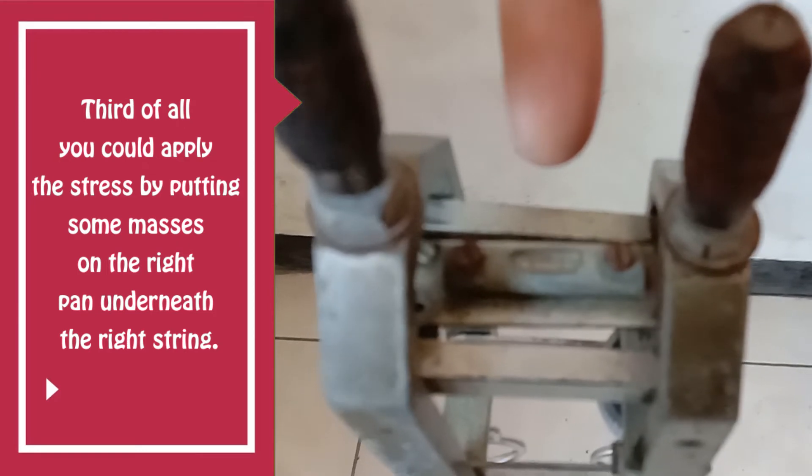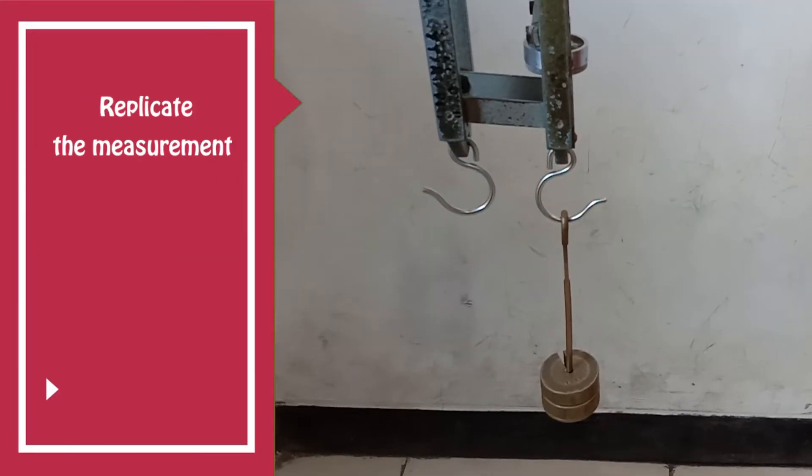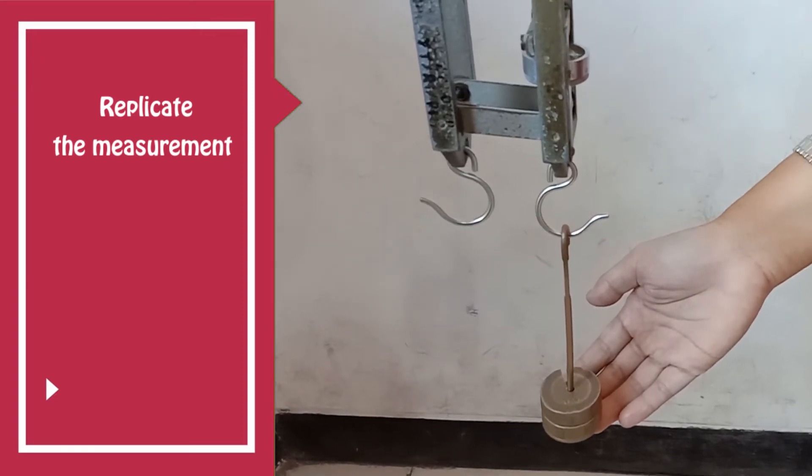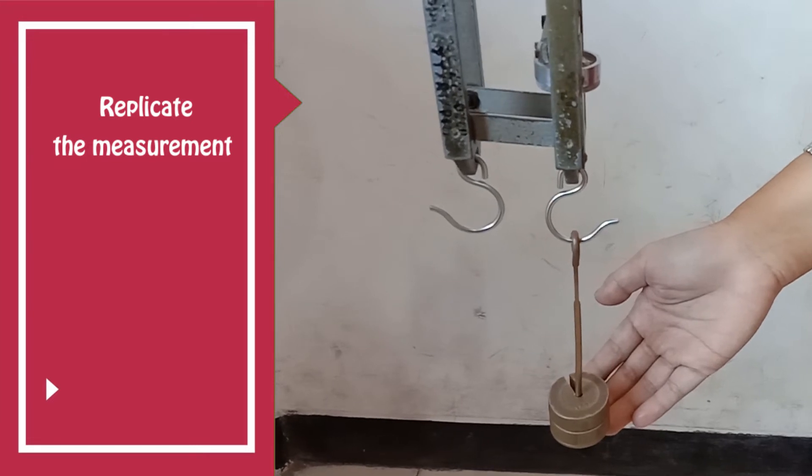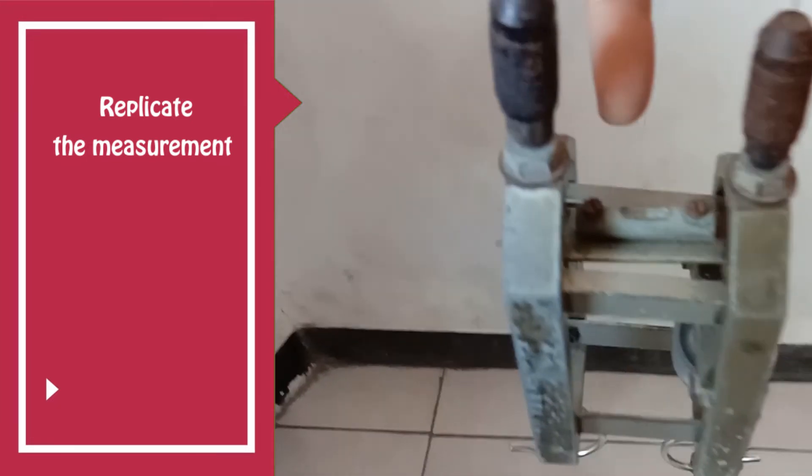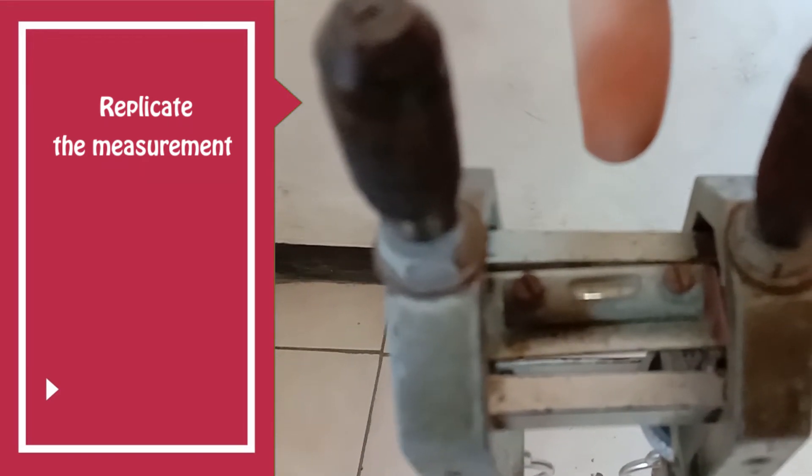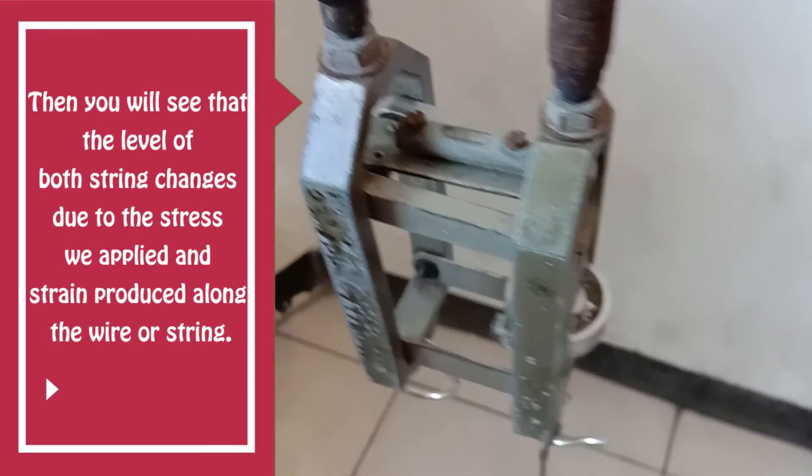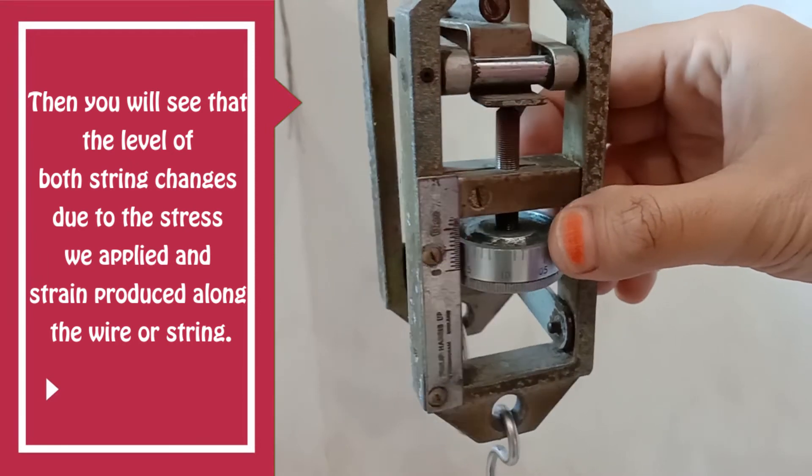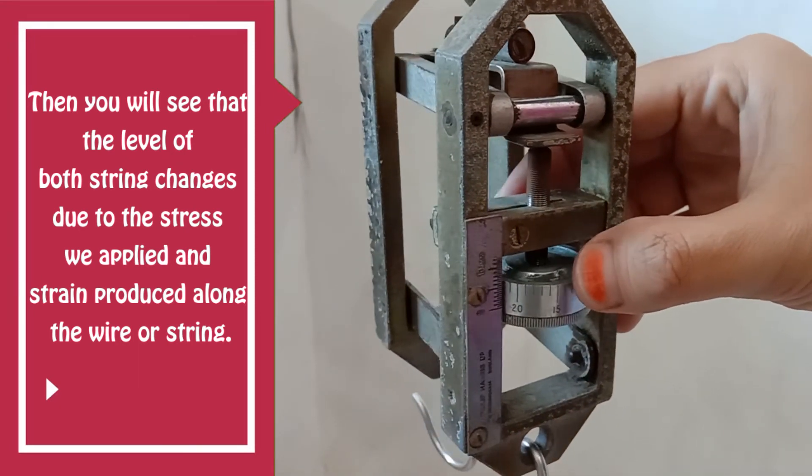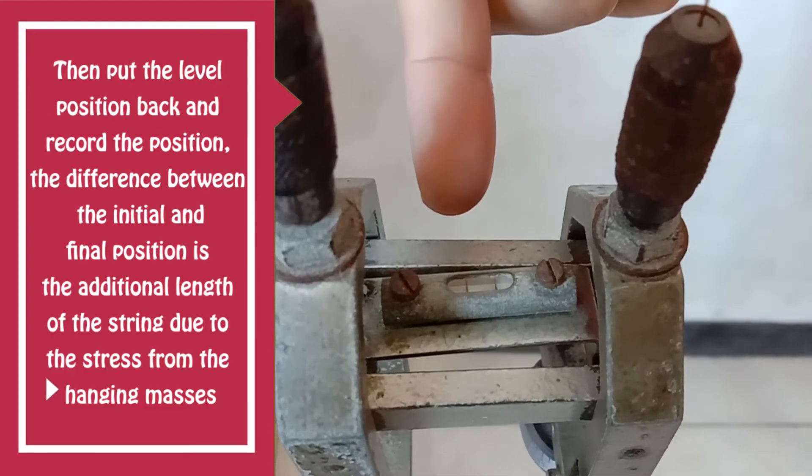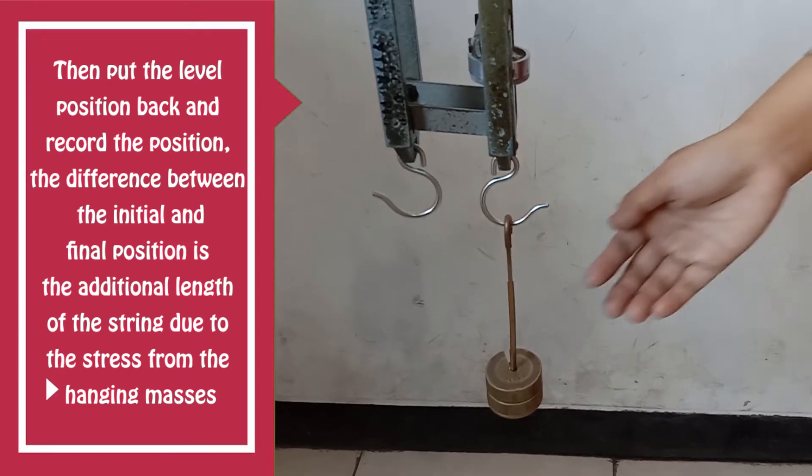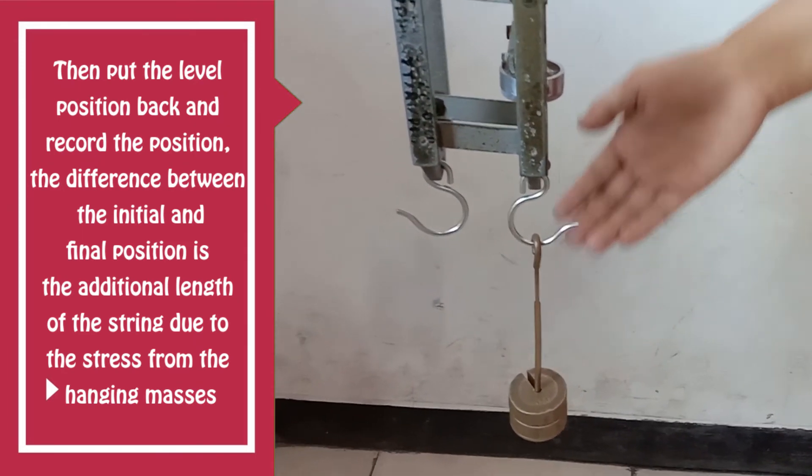By doing so, you will see that your stress will produce the strain, so the deformations of the materials you are able to investigate. So it's going to be very helpful for you to replicate the measurements. So you need to redo it again and again to apply more stress and more strains, so you can have an idea how the deformation will be and what is the plastic limitations of your samples, which is your copper wire. You will see that the level of both strings changes due to the stress we applied and strains produced along the wire or the string. Then put the level position back and record the new positions. The difference between the initial and final positions is the additional length of the string due to the stress from the hanging masses we applied underneath.